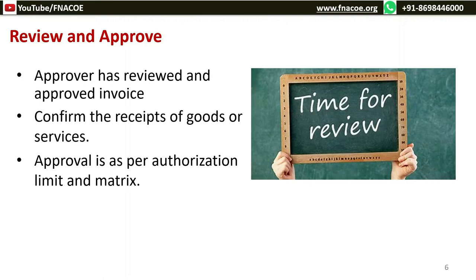Each company has a different policy. Threshold limits are defined to approve invoices for limited amounts. For example, an Assistant Manager may have approval authority up to $10,000 or equivalent; a Manager between $10,000 and $50,000; a General Manager for anything above $50,000. In some cases, certain individuals are identified to approve certain categories of invoices — for example, all utility bills approved by a designated person, all T&E (travel and expenses) approved by another, and credit and debit memos by yet another. Best practice is to annex the name, designation, and signature of the approver, which is helpful in tracing the invoice in future.